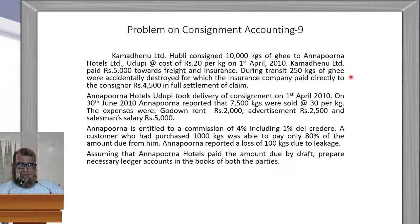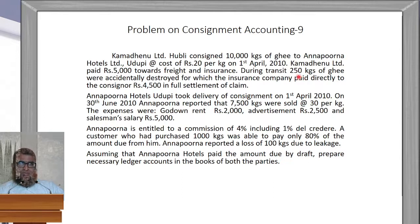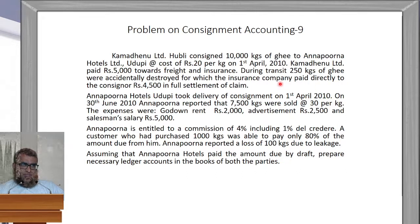During transit, 250 kg of goods were accidentally destroyed, for which the insurance company paid directly to the consignor Rs. 4,500 in full settlement of the claim. This is an abnormal loss — an accident is an abnormal event. So 250 kg is abnormal loss. We have to calculate the abnormal loss on the basis of 250 kg, and the Rs. 4,500 received from the insurance company should also be recorded.